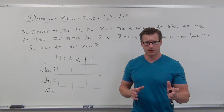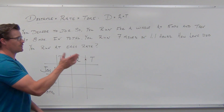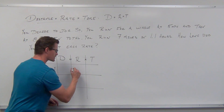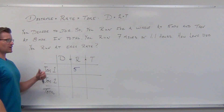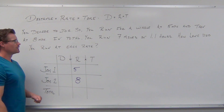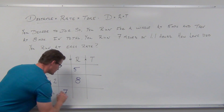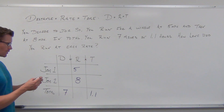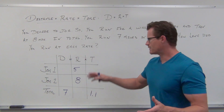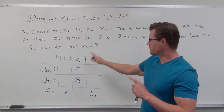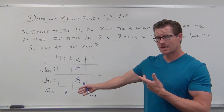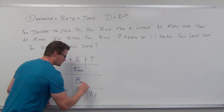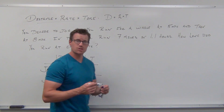Write down everything you know. We're going to read the problem carefully. First jog: we jog at five miles an hour — that's a rate, so jog one gets five miles an hour. Then we run at eight miles an hour — that's jog two. In total we ran seven miles and 1.1 hours. It also helps to label your columns: rate, total miles, and hours, so you know what you're dealing with.